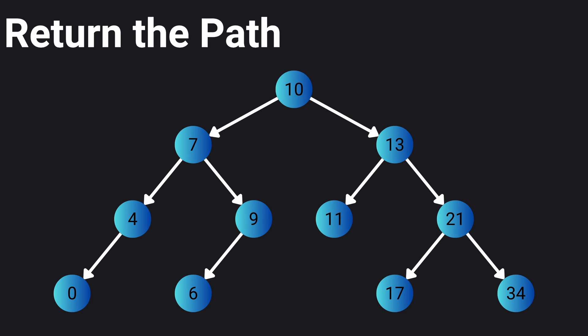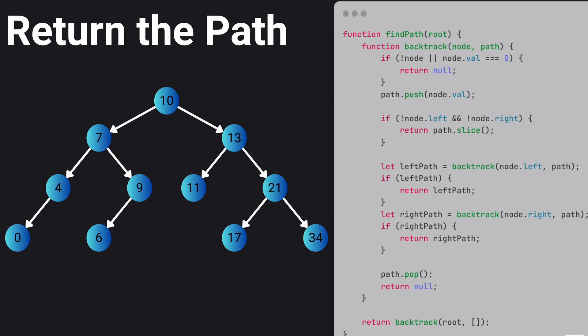Now let's consider the same example, but in this case we have to return the full path to the node instead of returning true or false. So in this example it would be 10, 7, 9 and 6 path. In this case we need to modify the backtracking algorithm to also keep track of the path as it explores the tree.